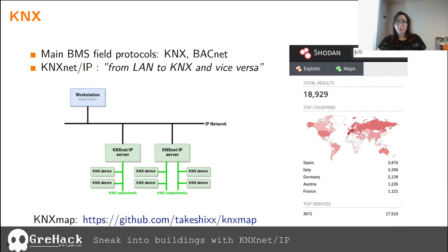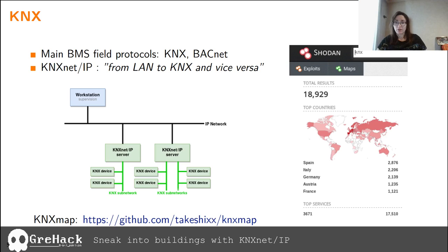Let's talk about KNX. This is a common fieldbus protocol for BMS for both industry and domestic use. Not the most common one, as there is BACnet, but still widely used, especially in Europe. As you can see in this screenshot from Shodan, we can find a lot of devices exposing port 3671, which is the port for KNX.NET/IP, the protocol specification for KNX over IP. KNX.NET/IP allows interfacing from LAN to KNX and vice versa.